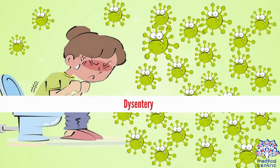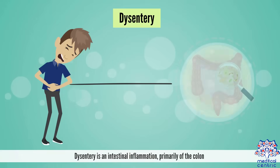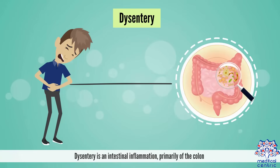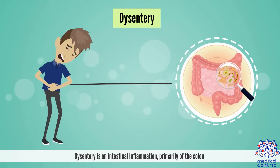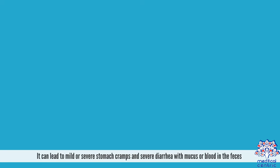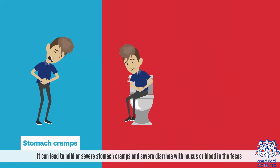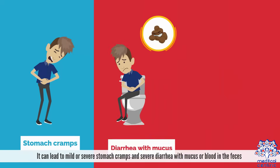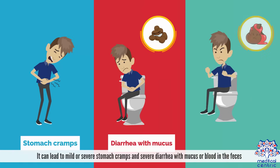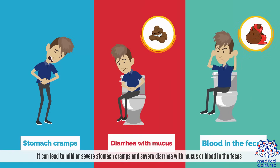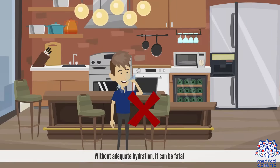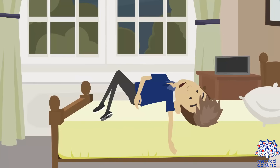Today's topic is dysentery. Dysentery is an intestinal inflammation, primarily of the colon. It can lead to mild or severe stomach cramps and severe diarrhea, with mucus or blood in the feces. Without adequate hydration, it can be fatal.